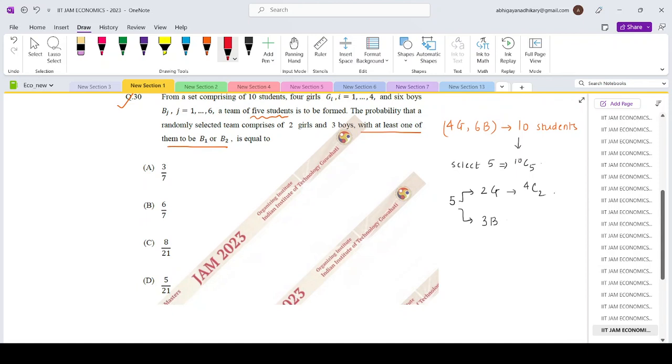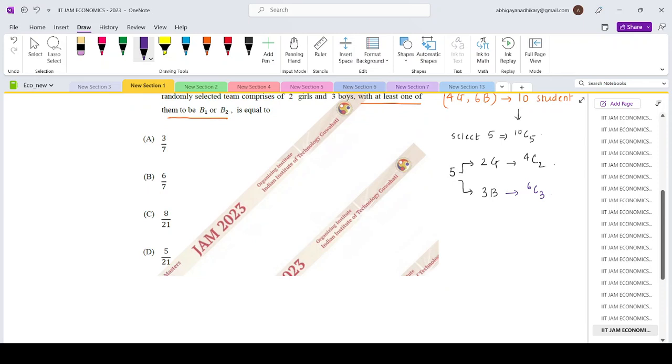Now check this: total there are 6 boys, right? So the total ways of selecting 3 boys out of the 6 would be 6C3.